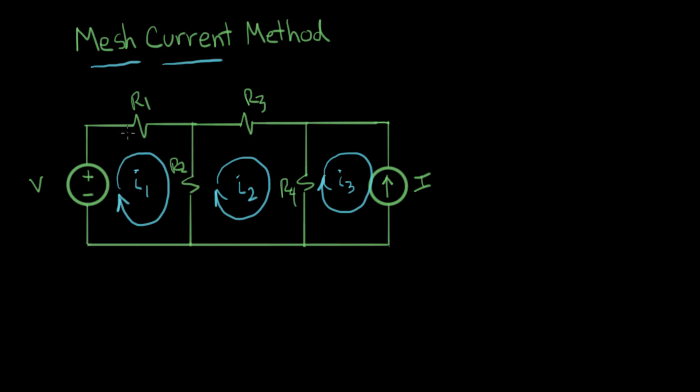Also, when we get up here to R1, mesh current I1 is flowing through R1 in this direction. What happens when we get to R2? We have one mesh current flowing down through R2 and another mesh current flowing up through R2. How could this make sense?